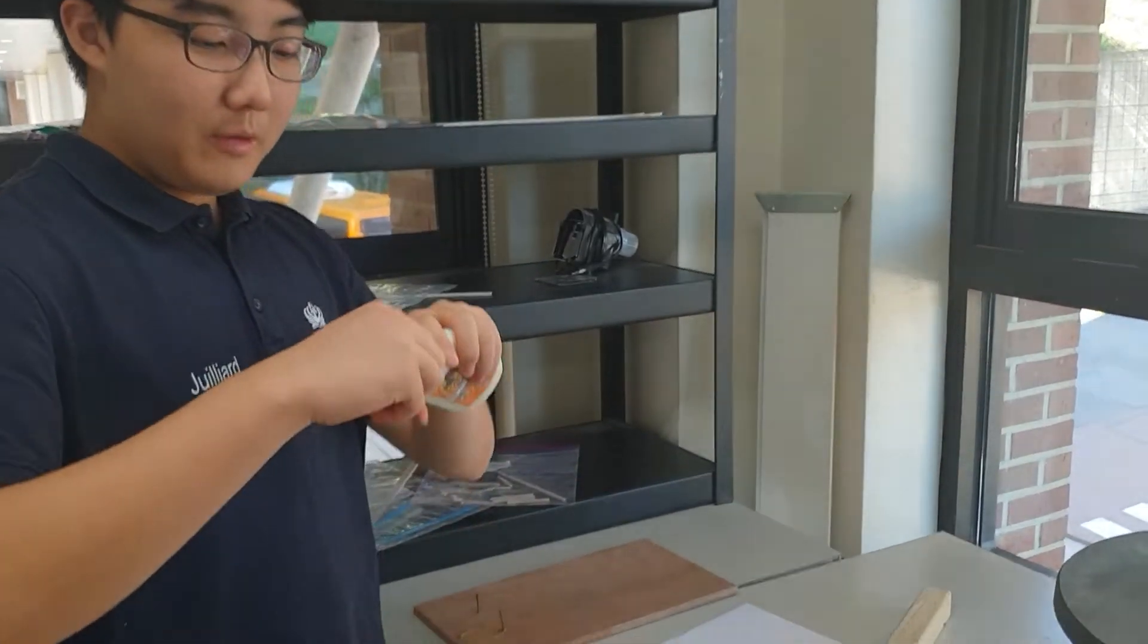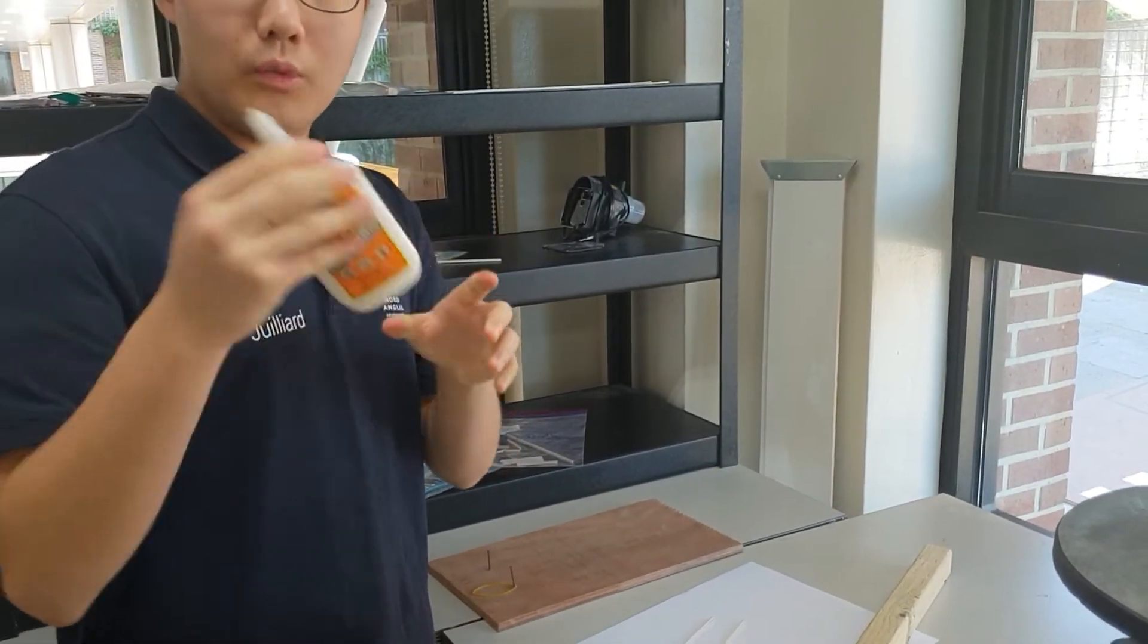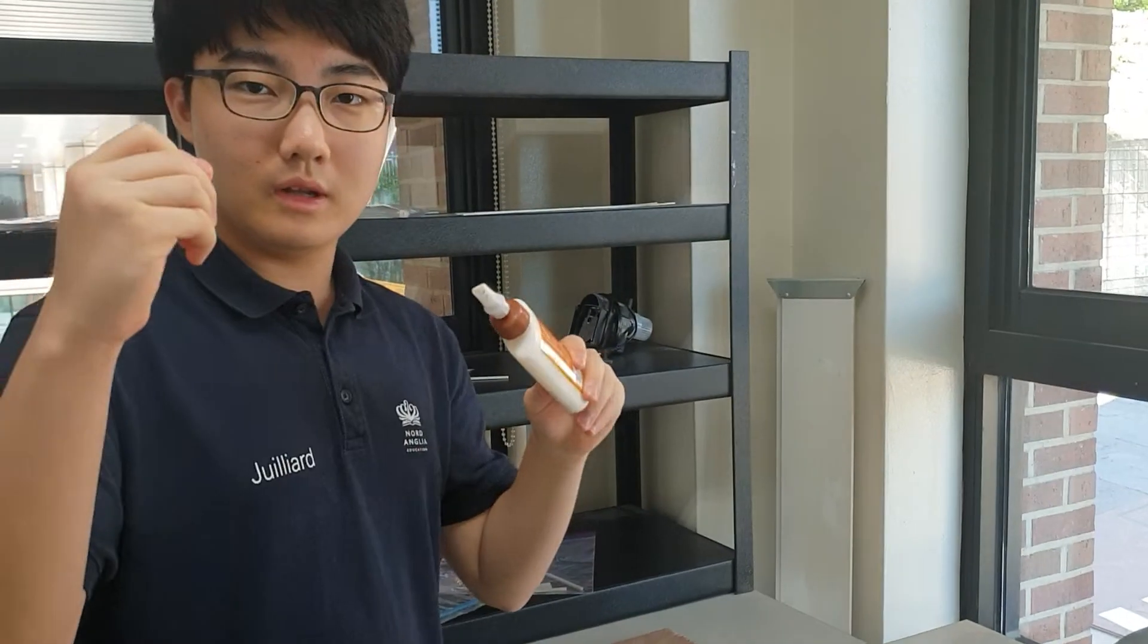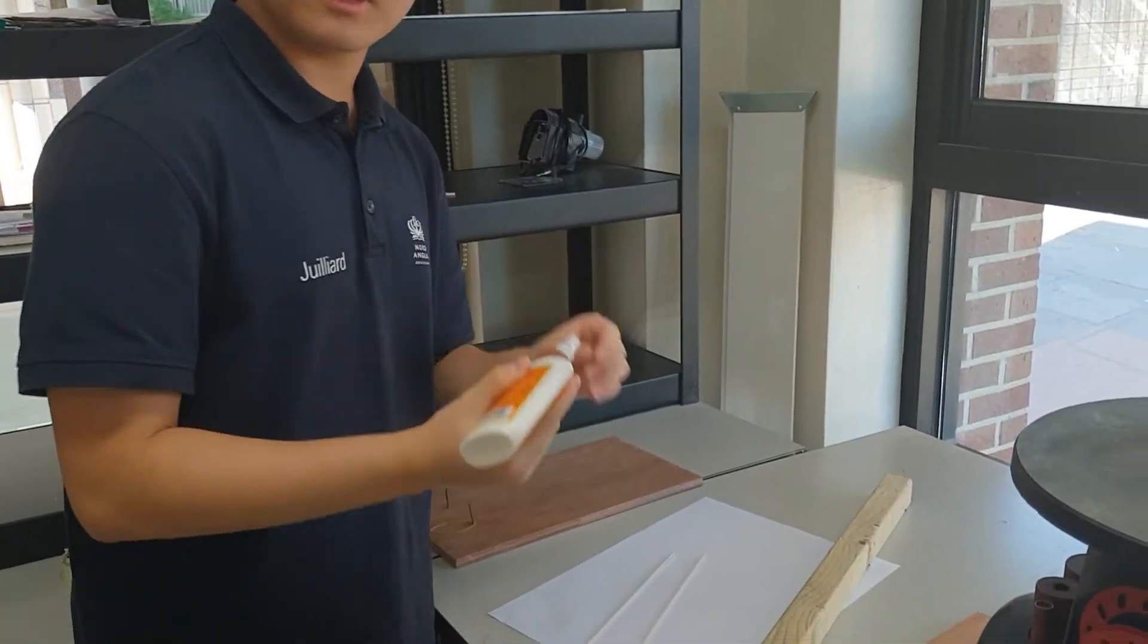Now first, remember to open the wood glue. If it doesn't seem like it's coming out, always pull it. And push it in for closing, of course.